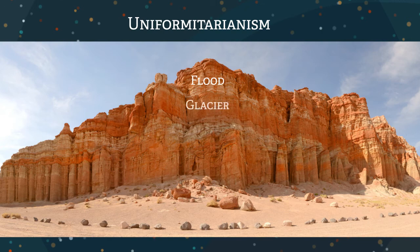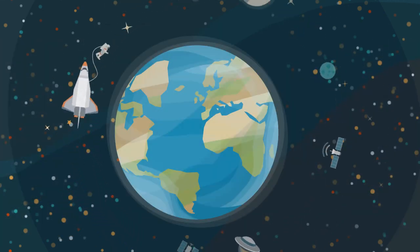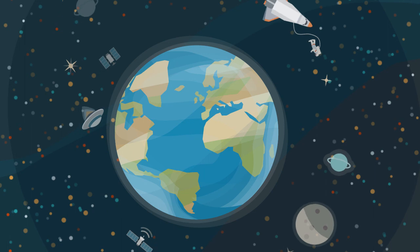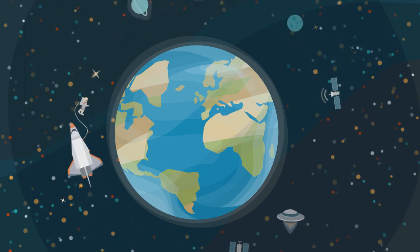Uniformitarianism is the process that presents things that can tell us about events that had happened in the past. The world is constantly changing, and by observing the changes we see today, we can learn about our past and prepare for the future.